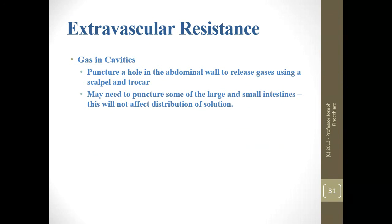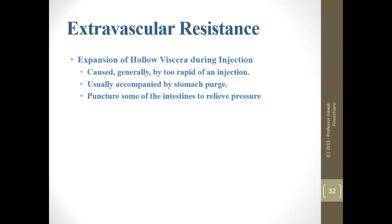For gas in cavities, puncture a hole — if gas is present it will leak out. Be careful if the gas has a microbial agent or foul odor; generally use a trocar, or if the skin is too hard, make a small incision with a scalpel first and then insert the trocar with a tube attached so you are not directly exposed to what comes out. You may need to puncture some of the large and small intestines to let gas out.